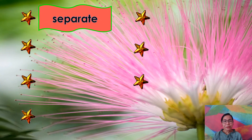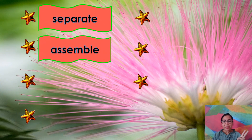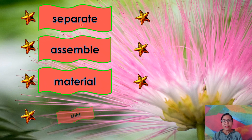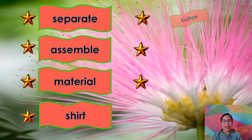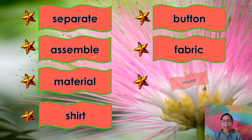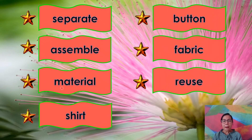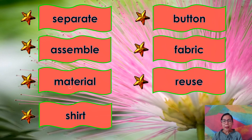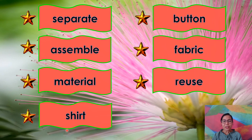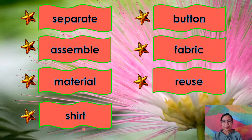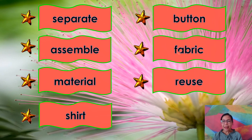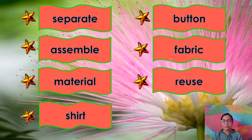For our vocabulary, let's try to read these words two times: separate, assemble, material, shirt, button, fabric.